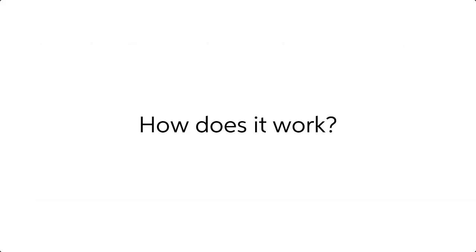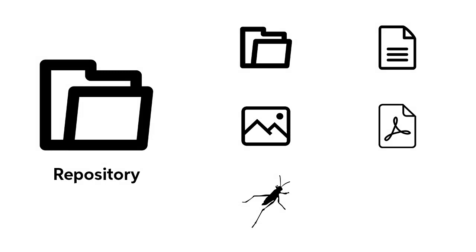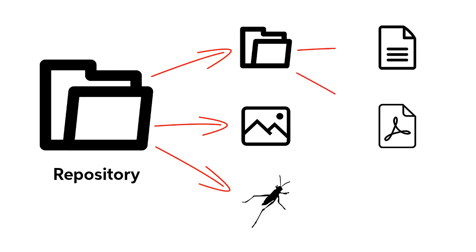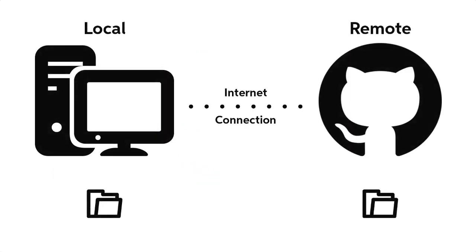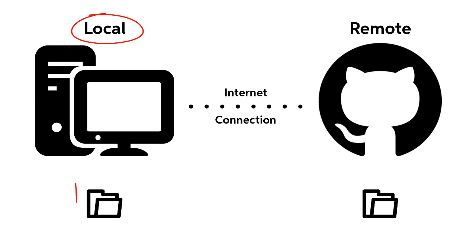How does it work? It is important to know some basic concepts before working with Githopper. Here is a simplified definition for all of them. The repository is, in simple terms, just a project folder that may contain all types of files or folders — it could be image files, PDF files, text files, even Grasshopper or 3D model files.